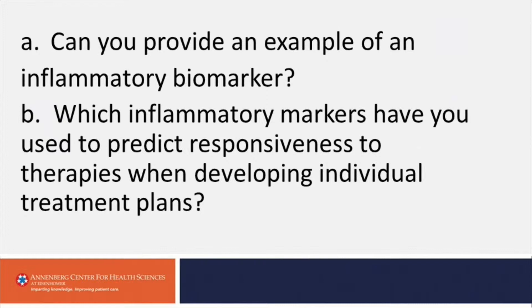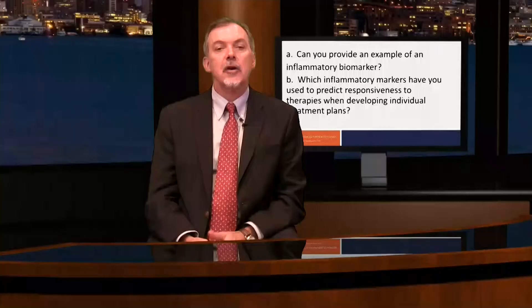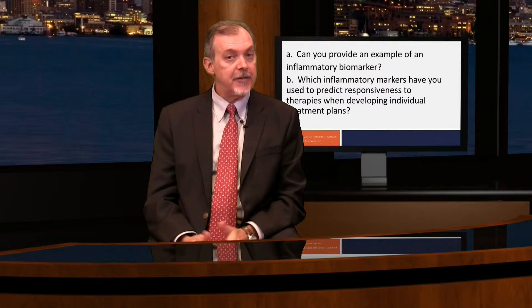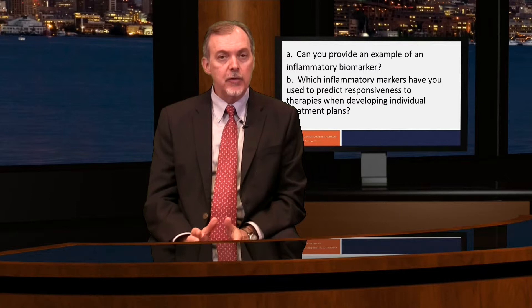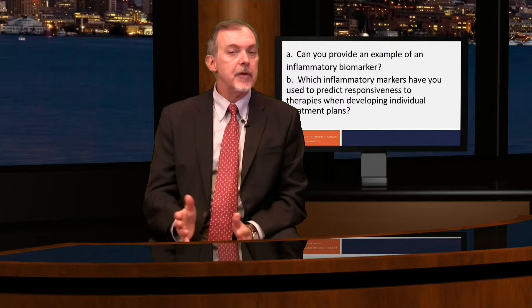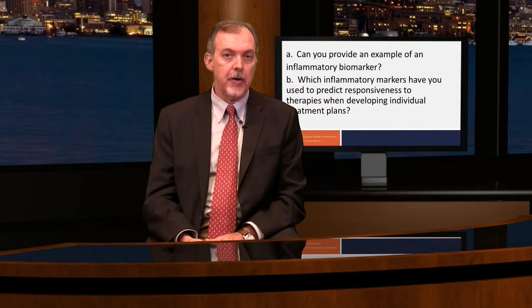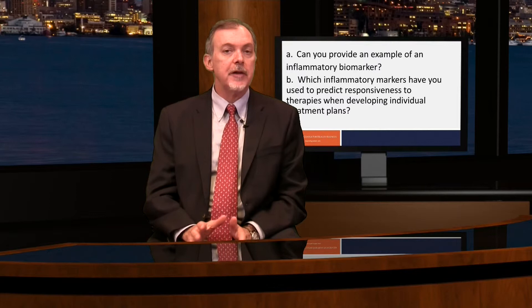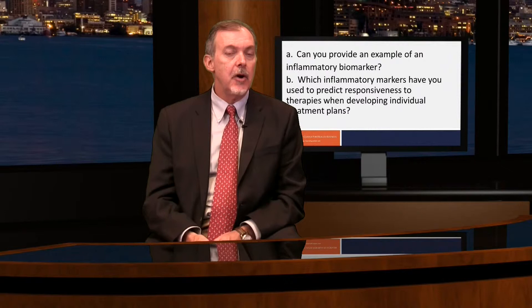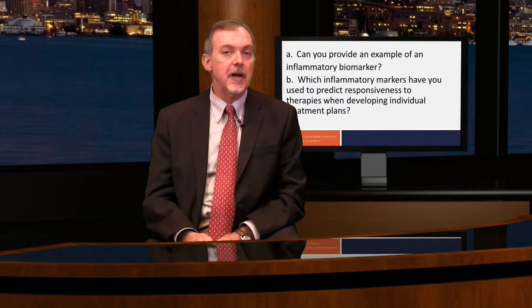Which inflammatory markers have you used to predict responsiveness to therapies when developing individual treatment plans? A good example of an inflammatory biomarker is the blood eosinophil count. A second one, which is frequently used in practice, is the exhaled nitric oxide. I tend to use biomarkers not necessarily in patients who come to the office with mild to moderate disease, or even a patient with severe disease who is responding to standard of care inhaled medical therapy like inhaled corticosteroids plus long-acting beta agonists. I employ these biomarkers in a patient who is escalating in disease severity or has not responded to standard therapy — most likely using a blood eosinophil count and an exhaled nitric oxide.